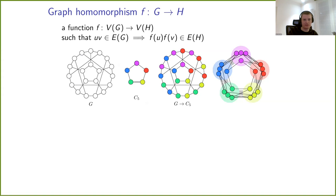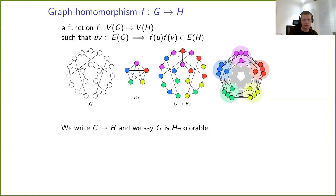I'm going to look more at graph homomorphisms, but of course it all generalizes to homomorphisms of general structures. Graph homomorphisms are functions from vertices to vertices which map edges to edges — you can look at them as a kind of coloring. If you have a graph G and graph C5, a homomorphism from G to C5 can be thought of as a coloring, or alternatively as a kind of embedding of G inside C5. I write G→H if there is a homomorphism, and also say G is H-colorable.